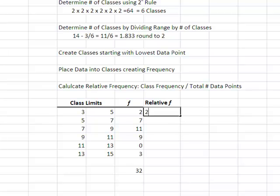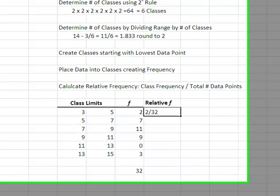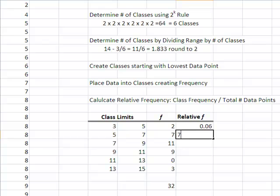So I'm going to take 2 divided by 32, I'm going to take 7 divided by 32, take 11 divided by 32, 9 divided by 32. That one's 0. And then 3 divided by 32.